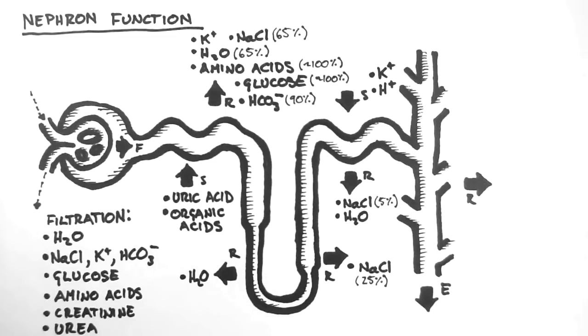So a simple way to think about the nephron is that the proximal tubule does most of the reabsorption and secretion, the loop of Henle does the concentration, and the distal tubule does the fine tuning.